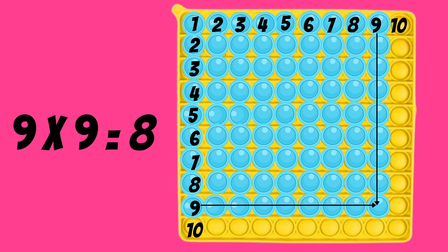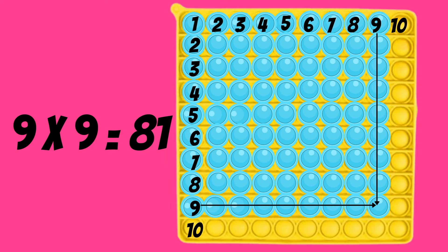Another example is 9 times 9. Do the same thing, and if you wanted to pause and count the bubbles, you would find that there are 81 blue bubbles.